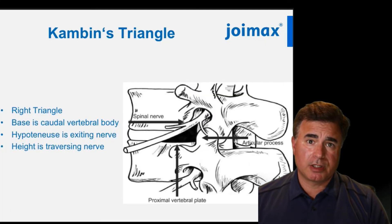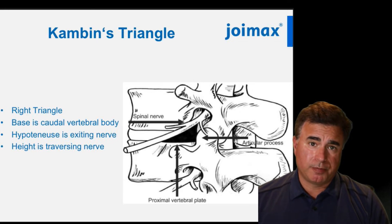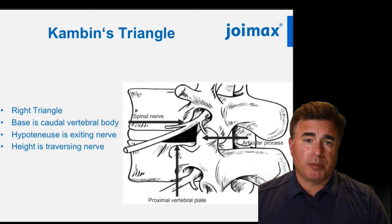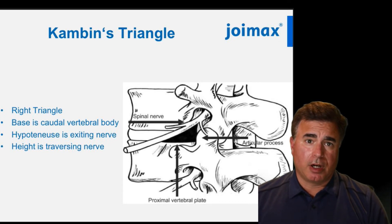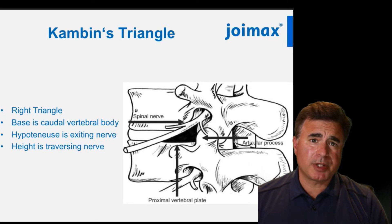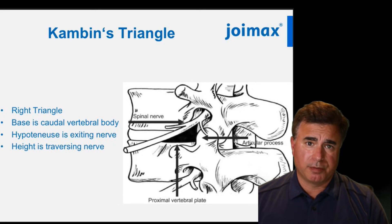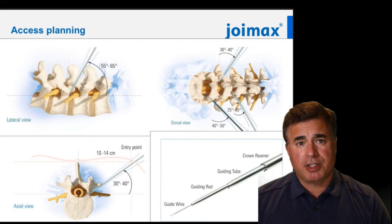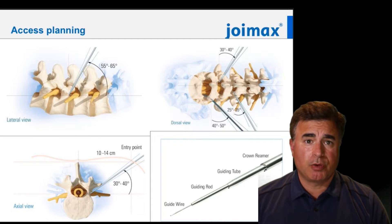One of the most important anatomic considerations that we must understand is the anatomic safe zone defined as Kambin's triangle. Kambin's triangle is defined medially by the traversing nerve root, laterally and superiorly by the exiting nerve root, and caudally by the superior end plate of the caudal vertebral body. This anatomic safe zone provides us entry into the spinal canal without fear of injuring the exiting nerve root. The transforaminal approach utilizes a rostral-caudal trajectory whose target is the base of Kambin's triangle — this is the widest point and the safest zone.